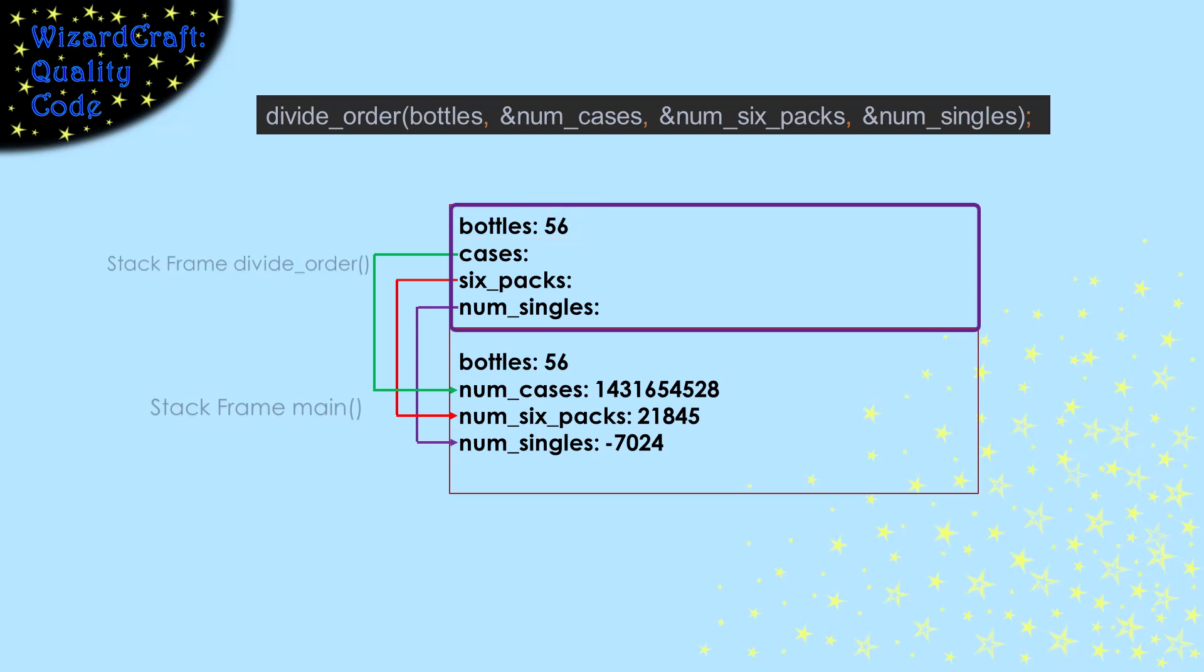Then, our other three variables are pointers. I've represented that with arrows showing where they point to. For example, we passed the address of num_cases into cases. That gave us this green arrow. When our code dereferences that pointer, it will use or set the value in num_cases. That's why we call them output parameters. Main passed a pointer to one of its variables into divide_order. So now divide_order can reach down the stack and manipulate the value of main's variables. Essentially, that lets divide_order pass values directly back into main's local variables.